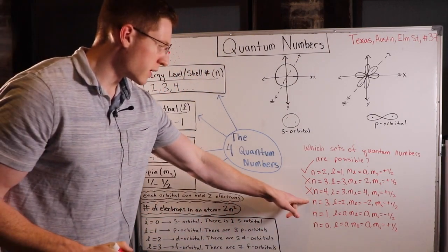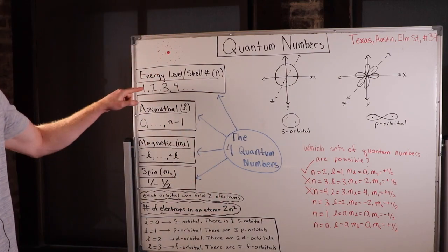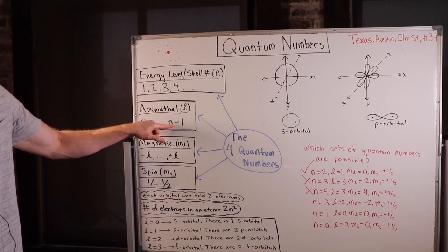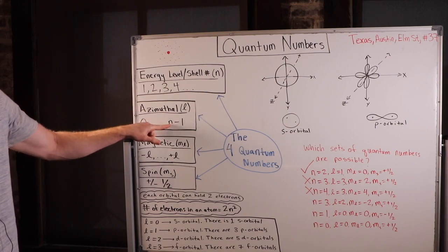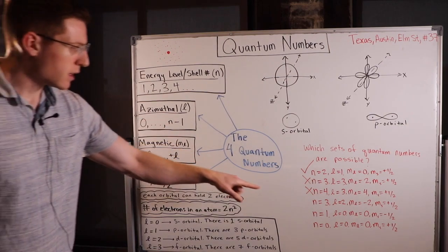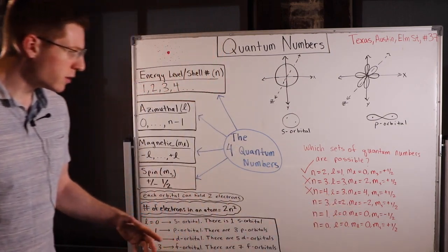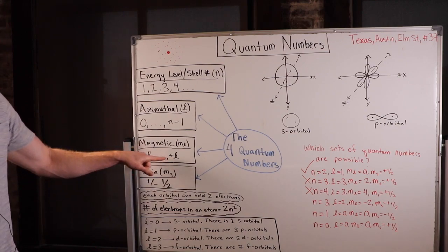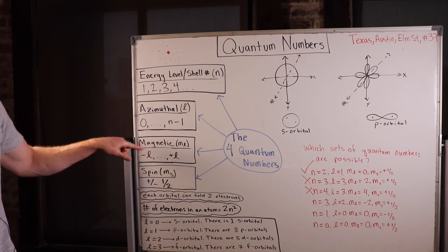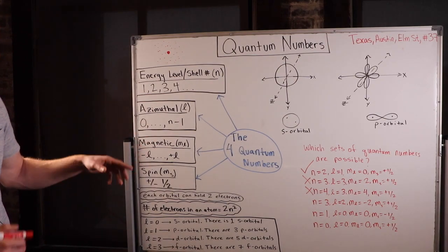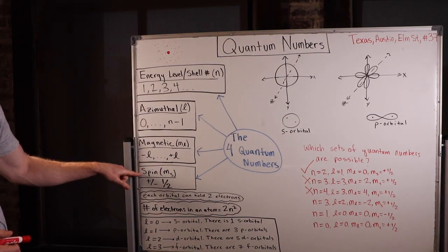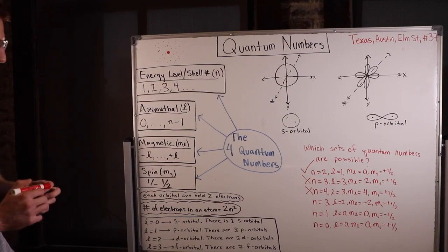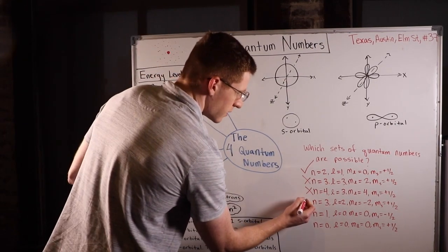The fourth example: N equals 3, L equals 2, M sub L equals negative 2, M sub S equals positive 1/2. L equals 2 is N minus 1, so that's one of the allowed azimuthal numbers. M sub L must be from negative L to positive L, and negative 2 is exactly negative L, so that works. M sub S equals positive 1/2 is one of the allowed values. This one is fine.